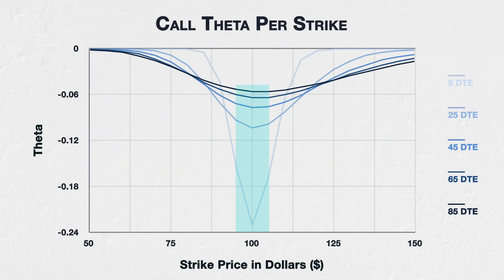For at-the-money options, the picture is very different. For options that are at the money, or close to it, as time passes and the days to expiry decreases, theta increases. In this example, we can see this effect for the options with strikes between $95 and $105. The reason for this behaviour is that unlike deep-in-the-money and deep-out-of-the-money options, for at-the-money options the rate that these options are losing their extrinsic value is not outpacing the reduction in days to expiry. So time is decaying faster than their extrinsic value.